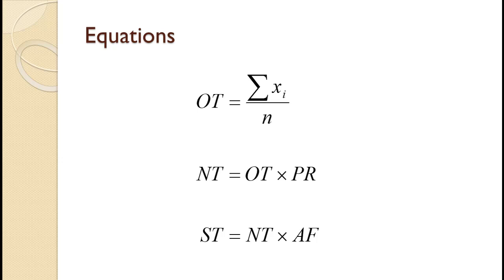Normal time or NT is OT times the performance rating or PR of the worker. Finally, standard time or ST is just NT times an allowance factor or AF.